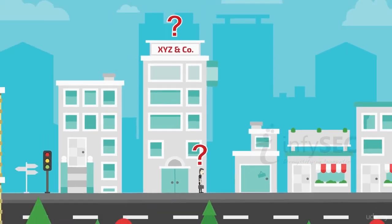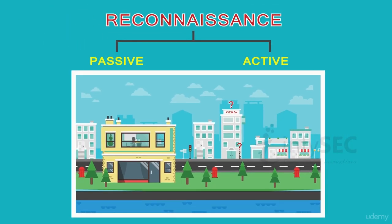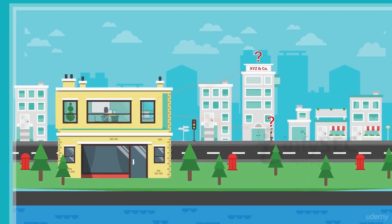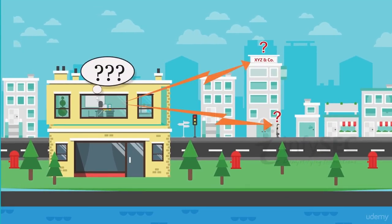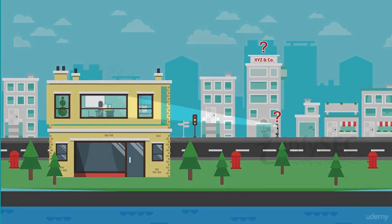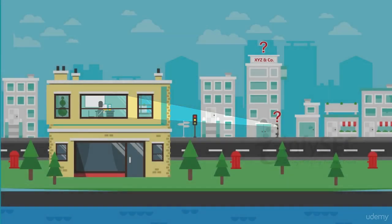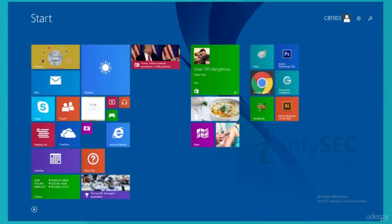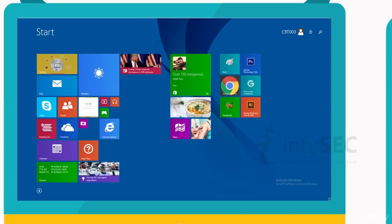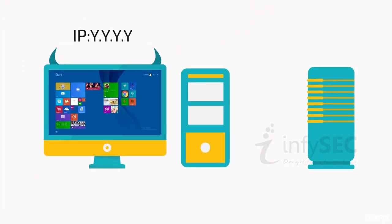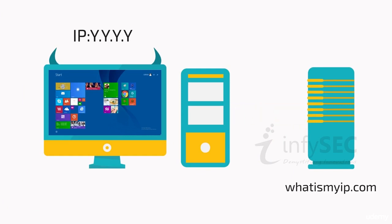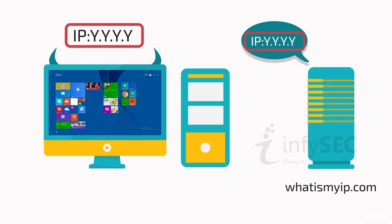Now that the target is fixed, let's probe the target for information. But what is happening? The target is able to track the attacker. What happened when the probe was initiated? Whenever a request is sent to a server — say, for example, whatismyip.com — it captures the actual IP of the sender.